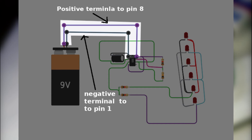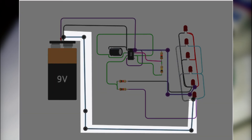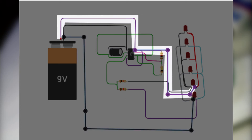Take the 9V battery. Connect the positive terminal to pin number 8 and the negative terminal to pin number 1 of the 555 IC. Connect the negative terminal of the battery to the negative terminal of the first block of LEDs. Connect the positive terminal of the battery to the positive terminal of the second block of LEDs.